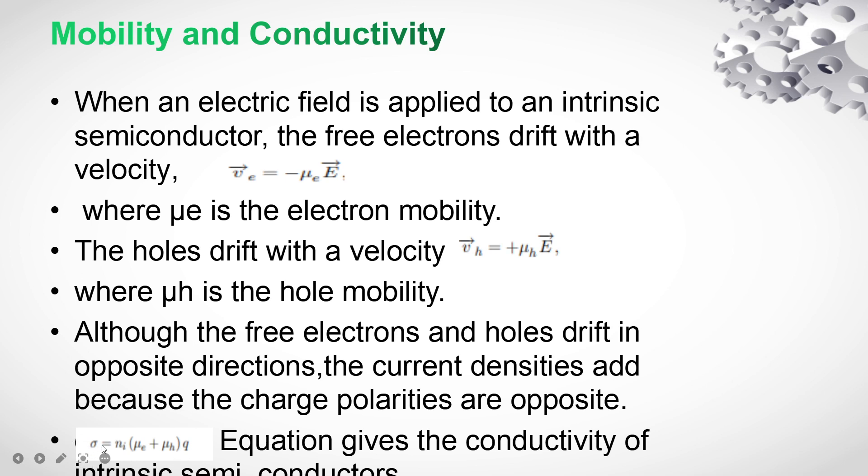Conductivity is the sum of electron and hole mobility. This is given by sigma equals Ni times (mu E plus mu H) times q. Ni is the intrinsic carrier concentration, mu E and mu H are the electron and hole mobility, and q is the charge.